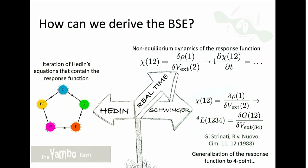To derive the BSE there are various approaches: for example the Schwinger approach using four-point quantities and functional derivatives, or starting from the vertex function in the GW context. Today we will follow the equation-of-motion approach in real time for the response function, which is perhaps a bit simpler to follow.